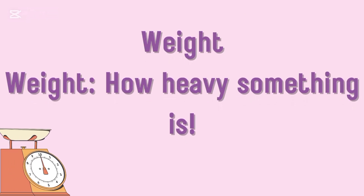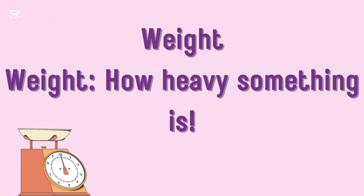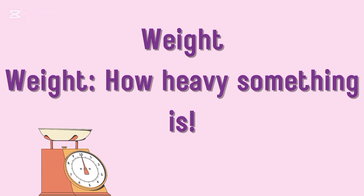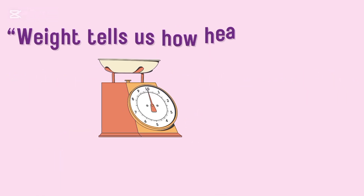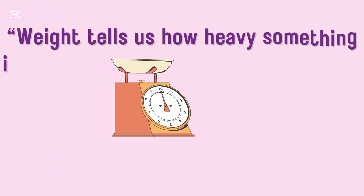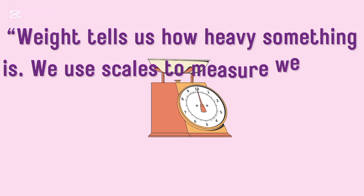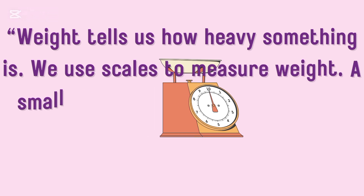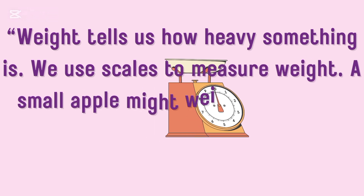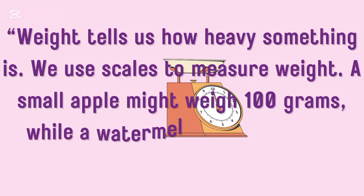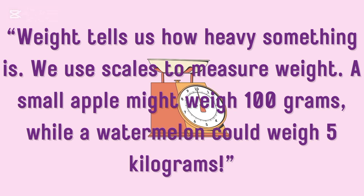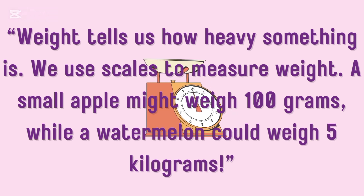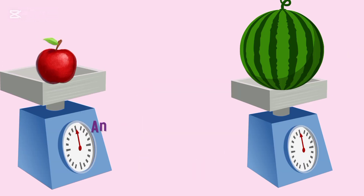Now next is weight. Weight tells us how heavy something is. We use scales to measure weight. A small apple might weigh 100 grams, while a watermelon could weigh 5 kilograms because it's heavy.